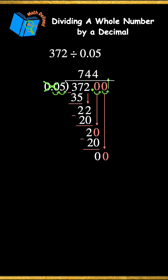And 5 divides into 0, 0 times, and my quotient is 7,440.